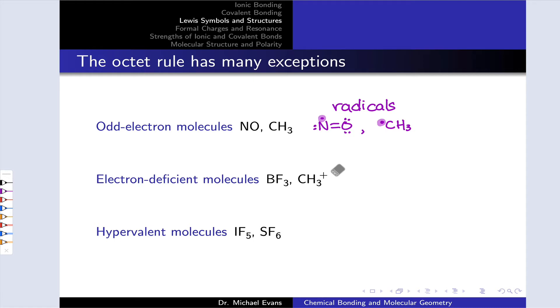For example, the total number of electrons around this nitrogen is 2, 4, 6, 7. In fact, the same is true for the carbon in CH3 with three single bonds and the radical electron. So with seven total electrons around those atoms, they're violating the octet rule.